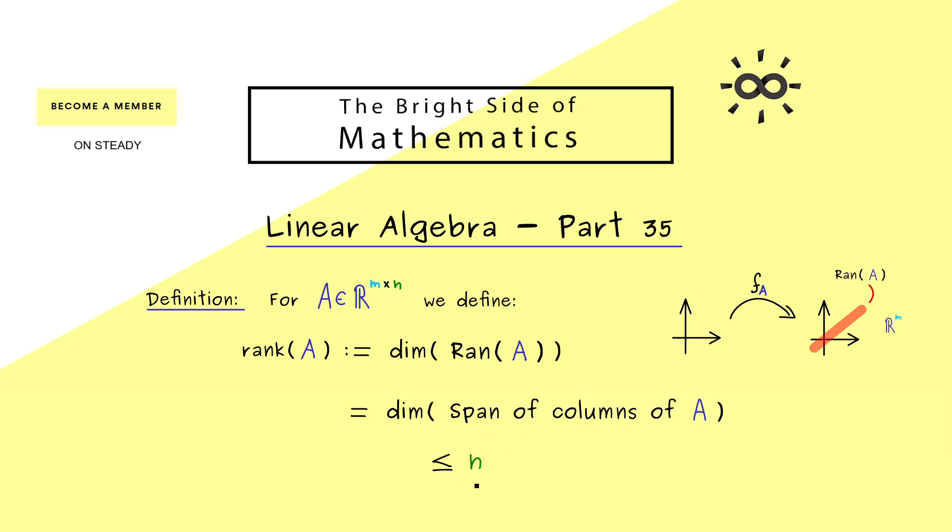However, in addition we also know that the range of A lies in R^m. Therefore, the highest dimension we can find in R^m would be m. In other words, the rank of A also has to be less than or equal to m. Hence the result is, rank(A) lies between zero and the minimum of n and m.